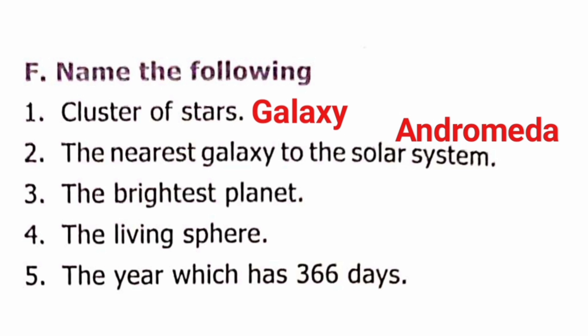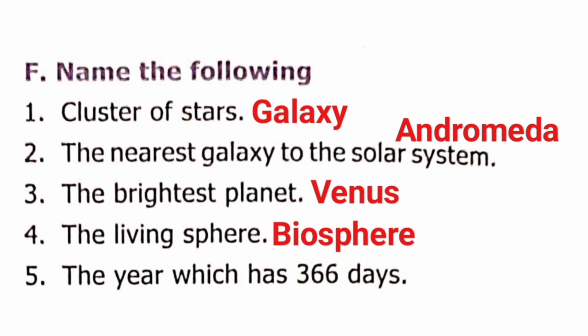Question 3: The brightest planet is Venus (V-E-N-U-S). Question 4: The living sphere is the Biosphere (B-I-O-S-P-H-E-R-E). Question 5: The year which has 366 days is called a Leap year.